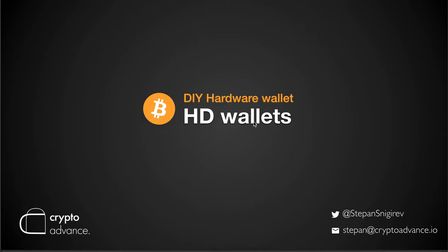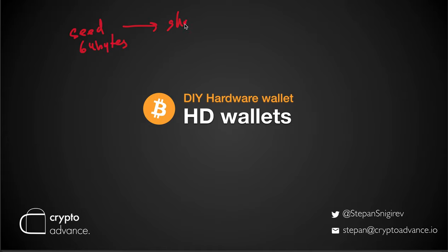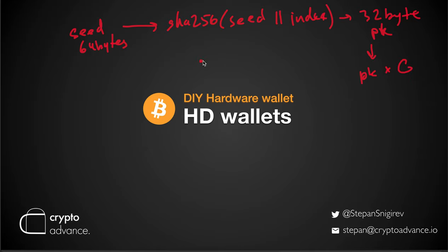Let's talk about key derivation in HD wallets. We want to derive multiple keys from the same seed. From the previous step we got a seed that is 64 bytes long, and we want to derive an arbitrary amount of new private keys from this seed and use them for our addresses. The most naive way to do it is to take the seed, hash it — say SHA256 of the seed concatenated with the index — and as output we get a 32-byte hash we can use directly as our private key. The corresponding public key will be the private key times the generator point.